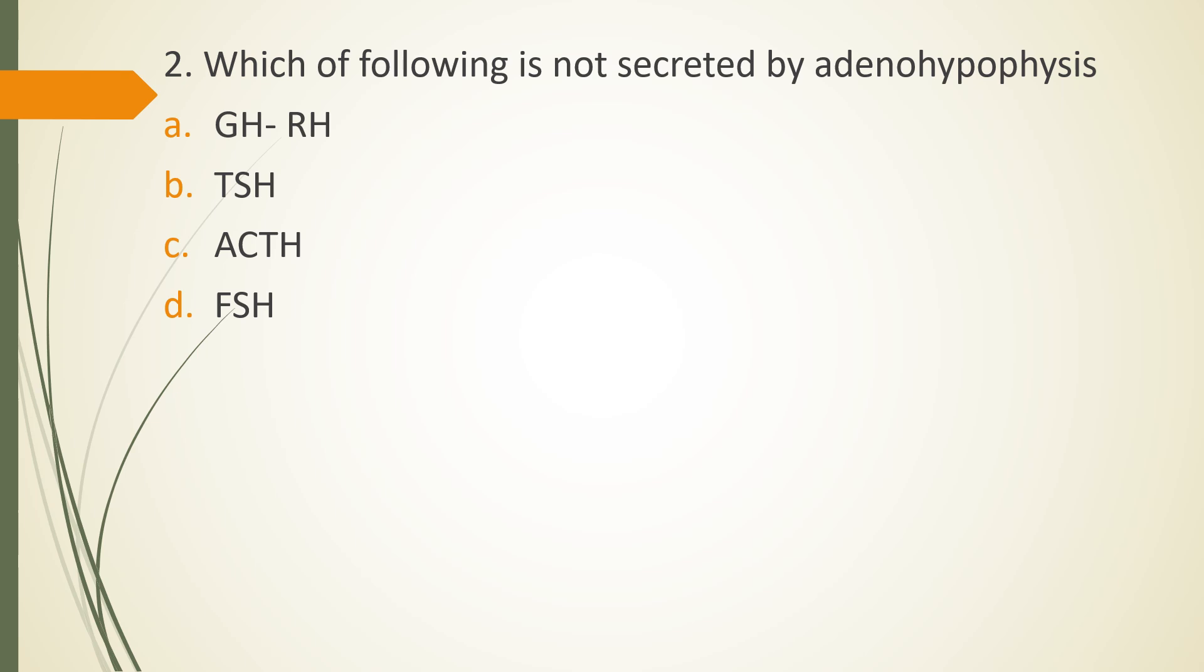Question 2. Which of the following is not secreted by adenohypophysis? GHRH, thyroid stimulative hormone or TSH, ACTH, FSH. The correct answer is option A. GHRH which is growth hormone releasing hormone. It is a hypothalamic hormone. It is released by hypothalamus that acts on adenohypophysis and carries out release of growth hormone which is GH. What is adenohypophysis? Anterior pituitary is called as adenohypophysis.